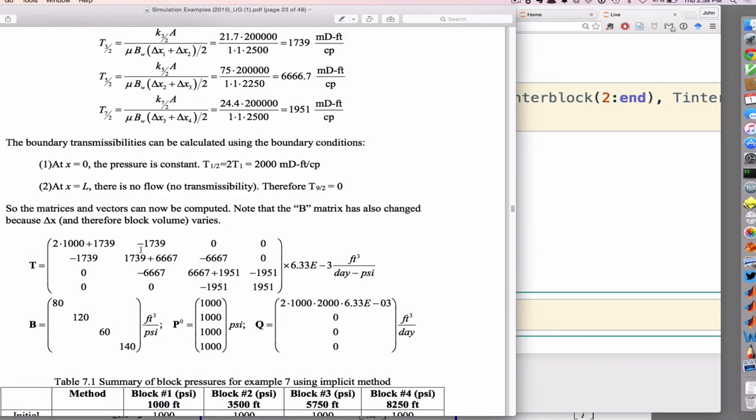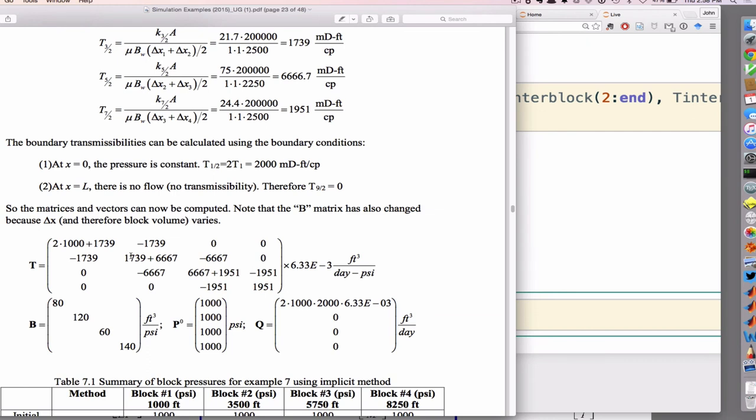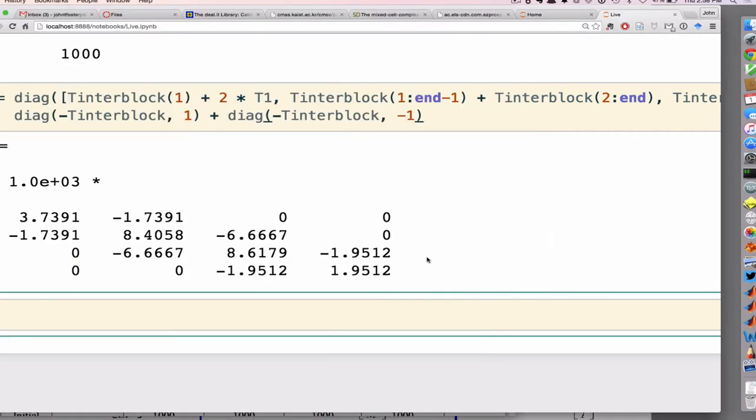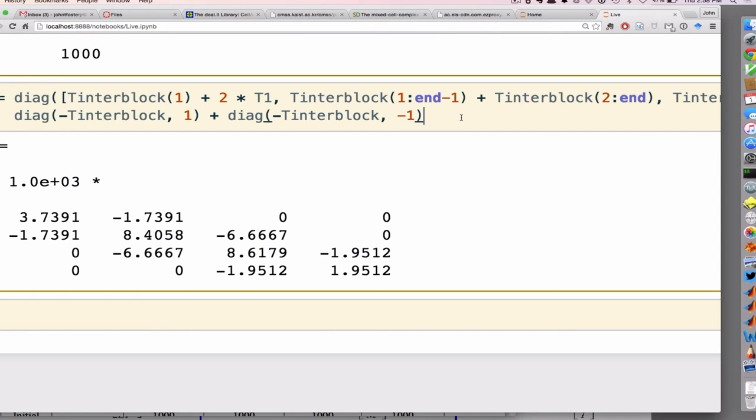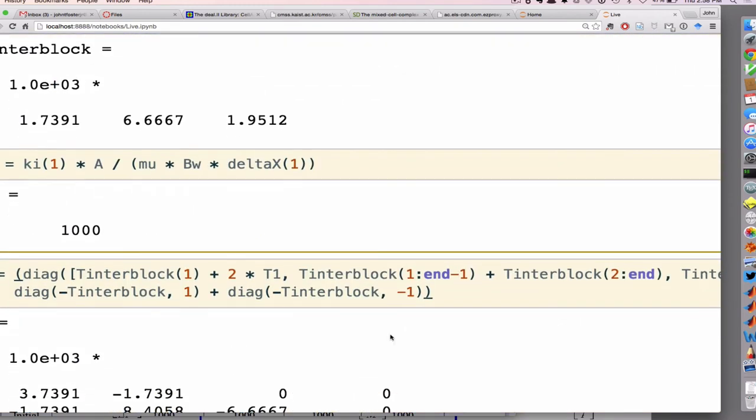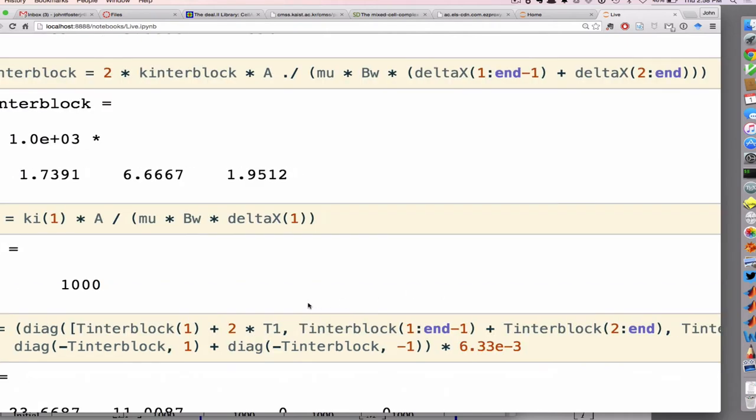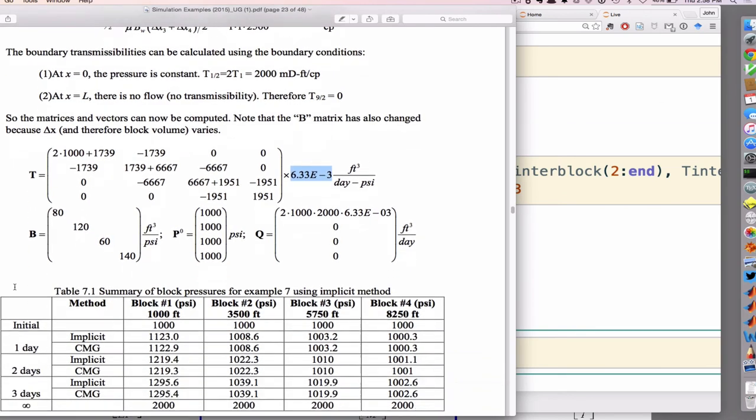So then this is my tri-diagonal matrix. And it looks right - 1739, 6667 on the off-diagonal portions. Everything looks right with the answer. I do have this little scale factor out there to convert it because this is millidarcy feet per centerpoise and I want to compute it into feet cubed per day PSI, so I have this 6.33 e to the minus 3. So I'll just tack that on to the end.